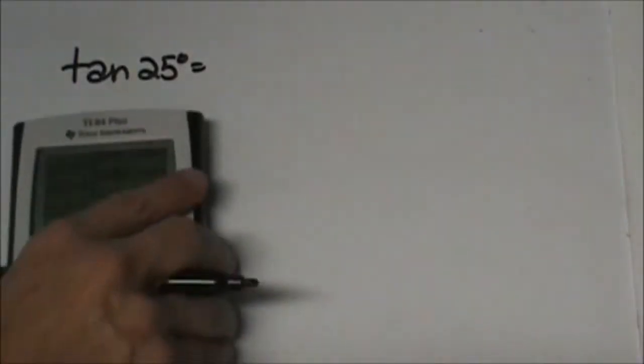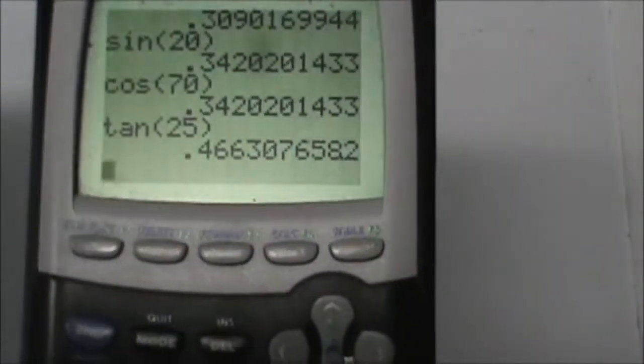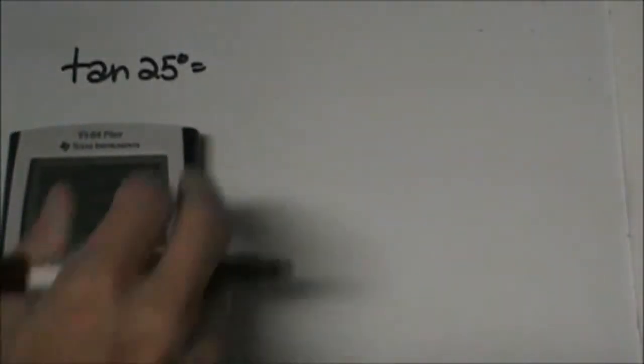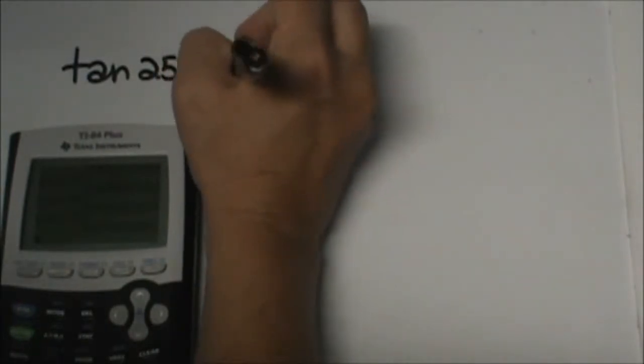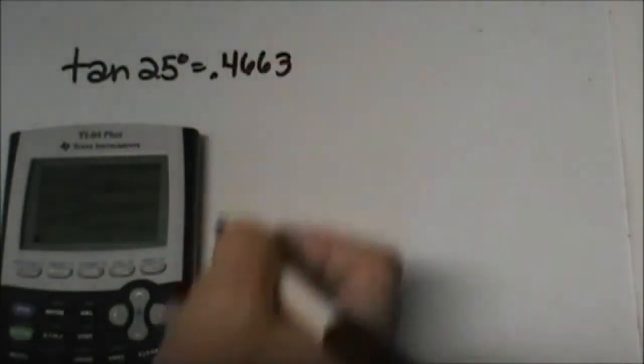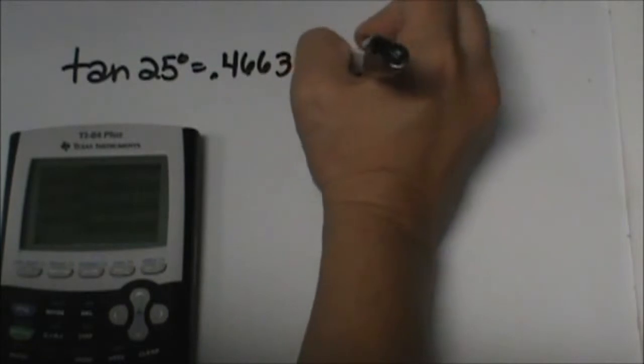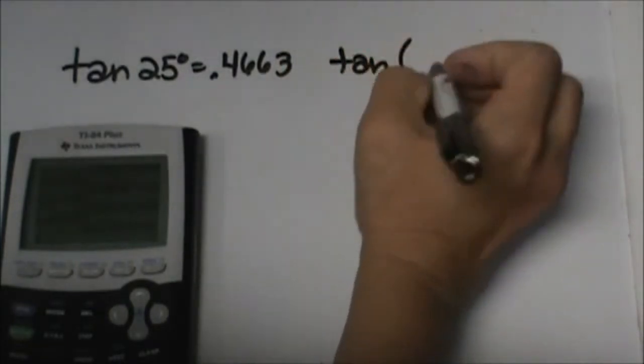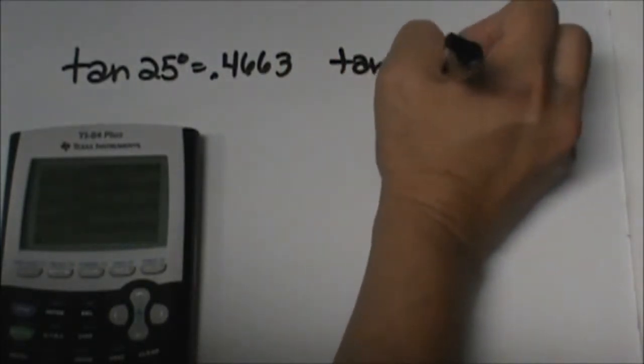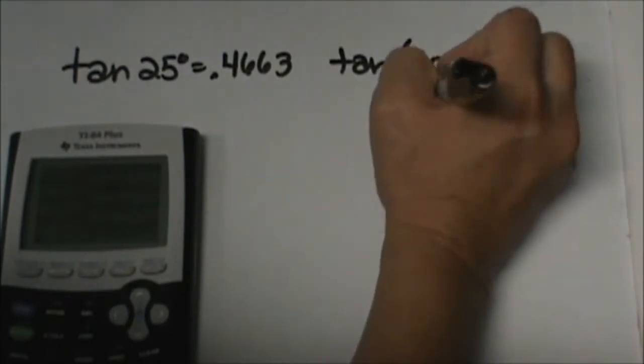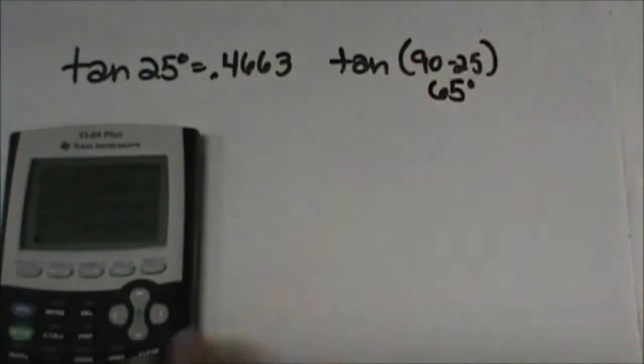Okay, the tangent of 25, tan of 25, that is equal to 0.4663. And the tangent of the complement, so 90 minus 25, well 90 minus 25 is 65, so I'm going to take the tangent of 65.